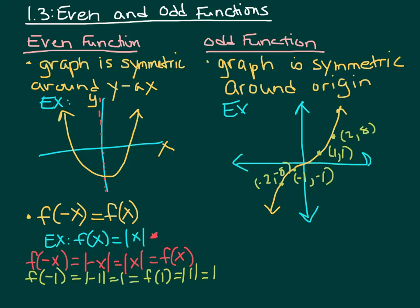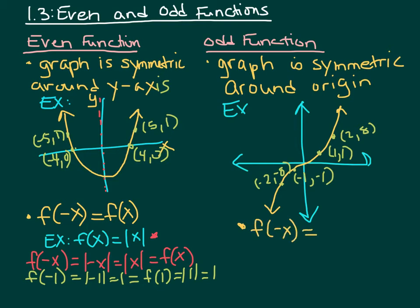Going back to even functions for a moment: if the point (4, 0) is on the curve, because we're symmetric around the y-axis, we know that (negative 4, 0) is also on the line. Similarly, if (5, 1) is on the line, then (negative 5, 1) is also on the curve. So with even functions, corresponding points have the same y value but opposite signs for x. Whereas with odd functions, corresponding points have both x and y as the same numbers but with exactly opposite signs. Algebraically, for odd functions, f of negative x equals negative f of x.